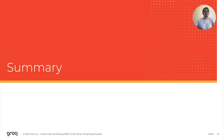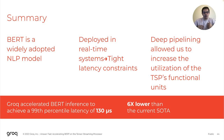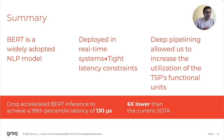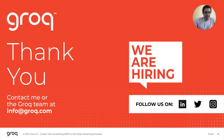To summarize: today we talked about how important BERT is, that it's widely adopted in many real-time systems in industry, enforcing a very strict latency constraint on inference. We've shown that by deeply pipelining operations in BERT, we're able to increase the utilization of the functional units of the TSP, allowing us to accelerate BERT inference to achieve a 99th percentile latency of 130 microseconds — six times lower than the current state-of-the-art latency. Thank you for attending today's talk, and I'm happy to take questions.